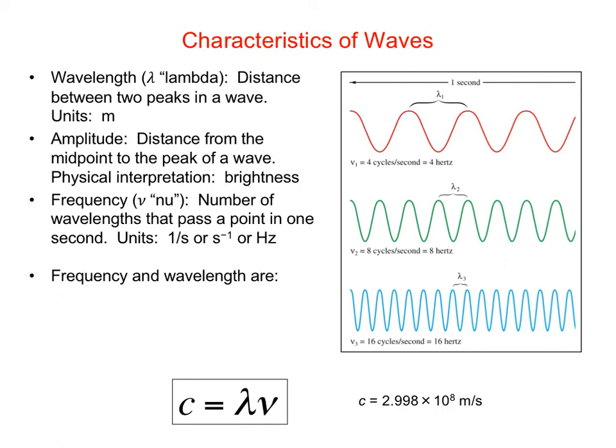The third property is frequency. The letter we use to represent frequency is the Greek letter nu (ν) - it looks like a cursive v, but it is not a v. The frequency is the number of wavelengths that pass a point in one second. As an example, if this is the distance that these waves can travel in one second, in this red wave there are one, two, three, four wavelengths, so four wavelengths would pass this point in one second and the frequency would be four.